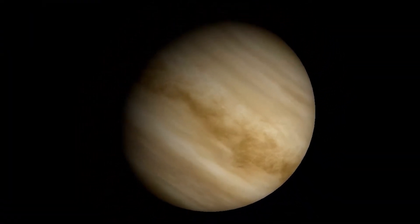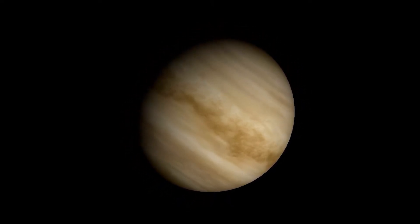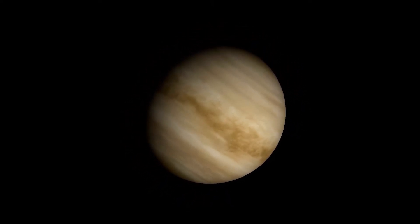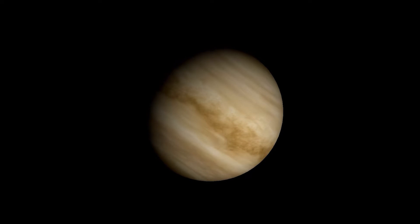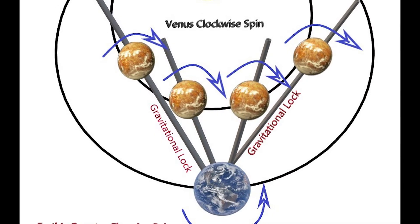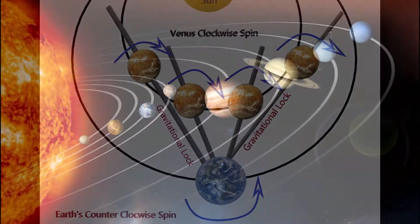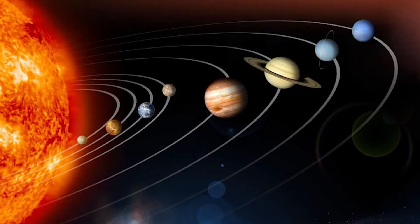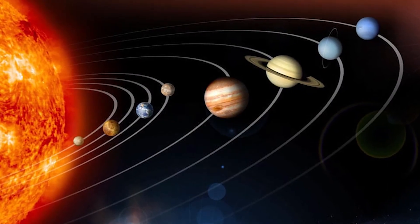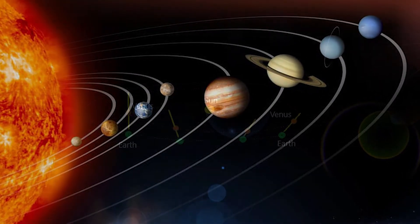All the other planets in the solar system spin counterclockwise — Venus's clockwise axial spin is a major anomaly. It can be observed that planet Venus in its orbit around the sun orbits in parallel to the sun's polarities, as all the other planets in the solar system.